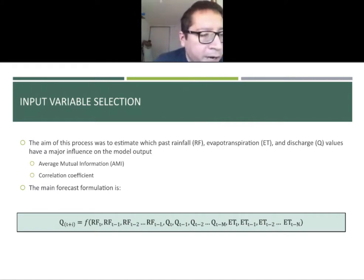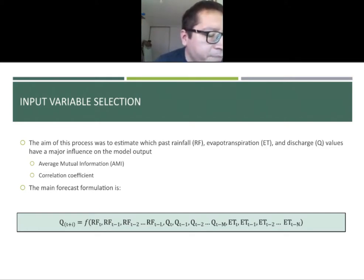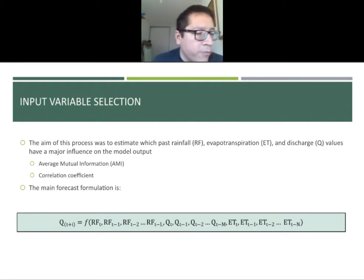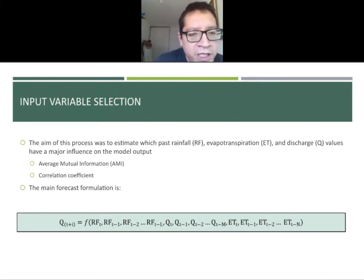The first part is input variable selection, where you want to select the proper variables to build your data-driven model. You want to evaluate which past rainfall, evapotranspiration, and discharge itself provide meaningful information to the predicted discharge. We use average mutual information and correlation coefficient to detect which variables and past time steps provide more information to the output. The predicted discharge is a function of current and past rainfall, discharge, and evapotranspiration.